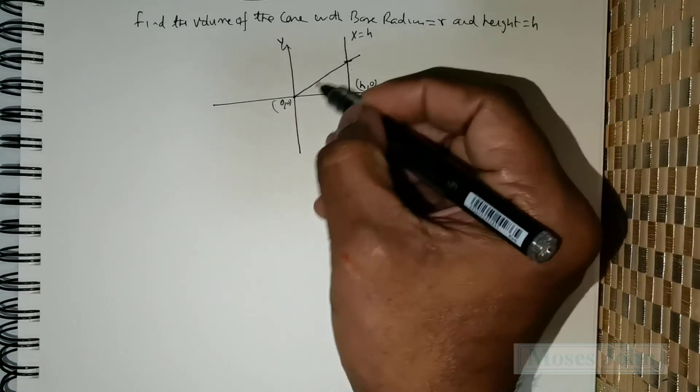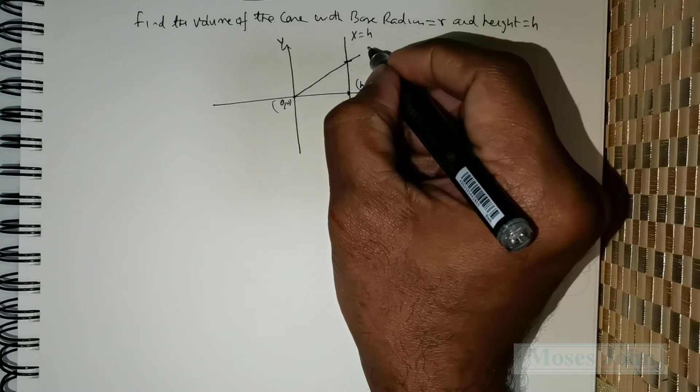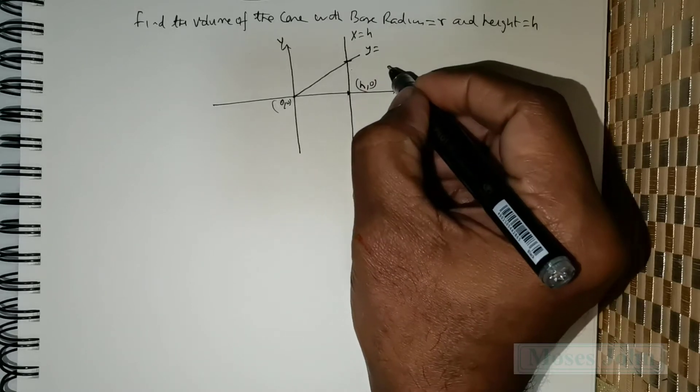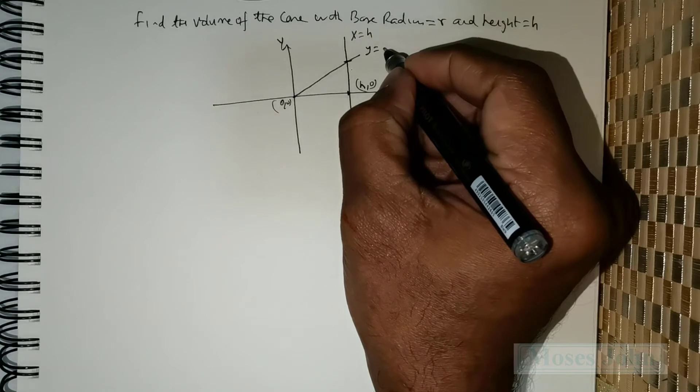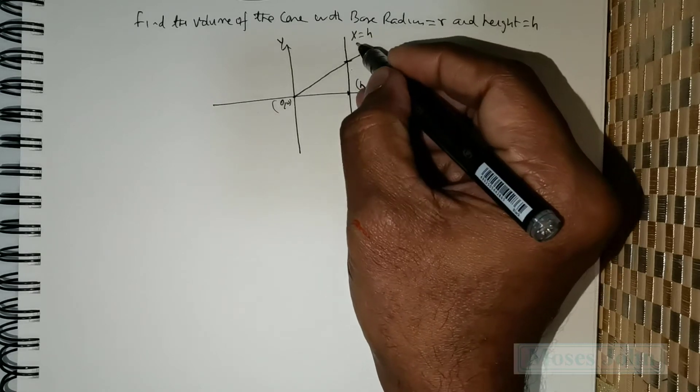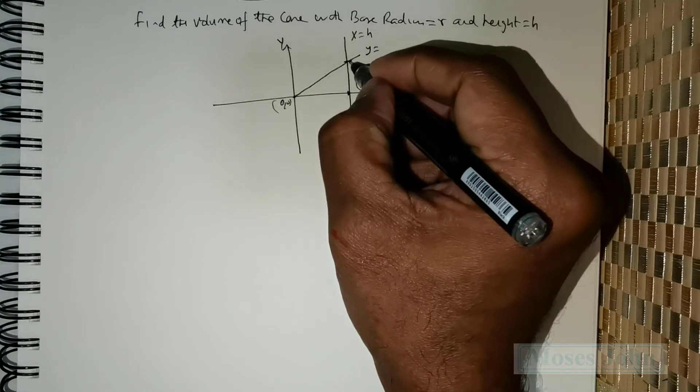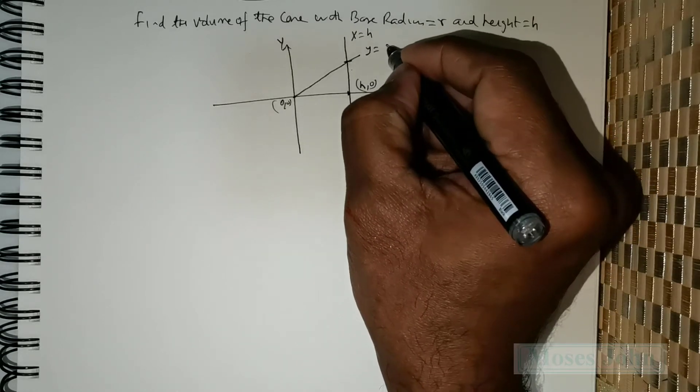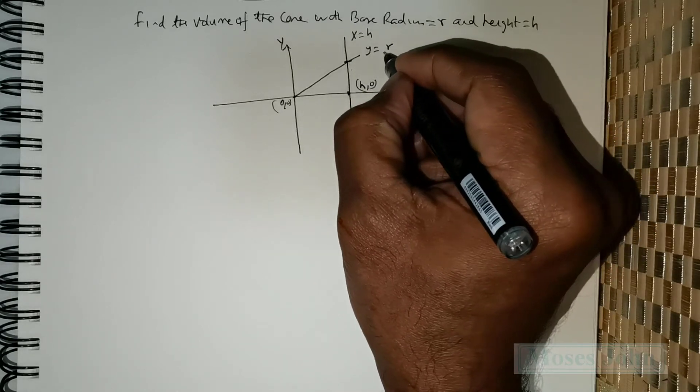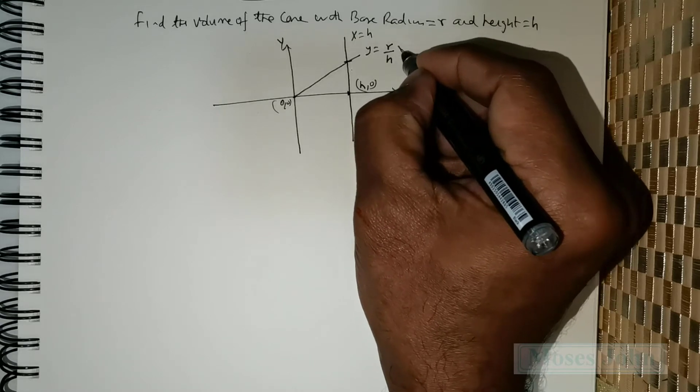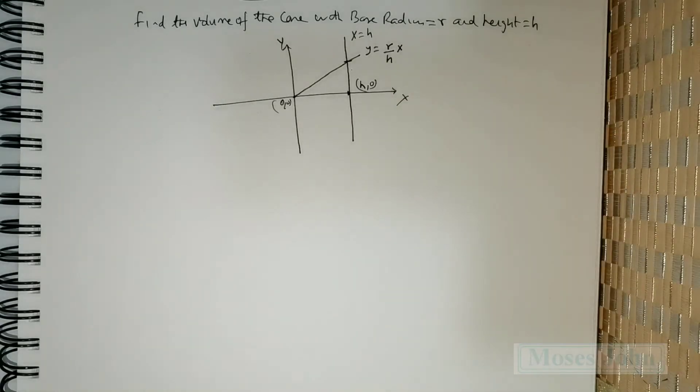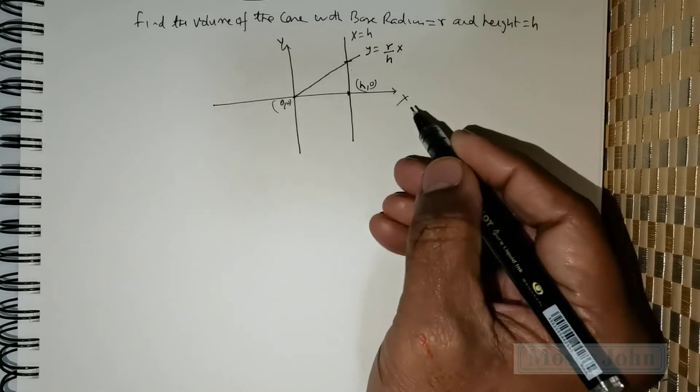So this line will have an equation, right? That would be y is equal to... Now, since we know that x is equal to h, naturally, this line should be of the form y is equal to r over h times x. So we will be revolving this line.